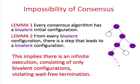Given an algorithm that purports to solve consensus, one first proves that it has an initial configuration that is bivalent — meaning there is an execution from the configuration in which some process outputs zero, and another execution in which some process outputs one. Then one shows that from every bivalent configuration, there is a step by some process that results in a bivalent configuration. This implies the algorithm has an infinite execution, and hence is not wait-free.